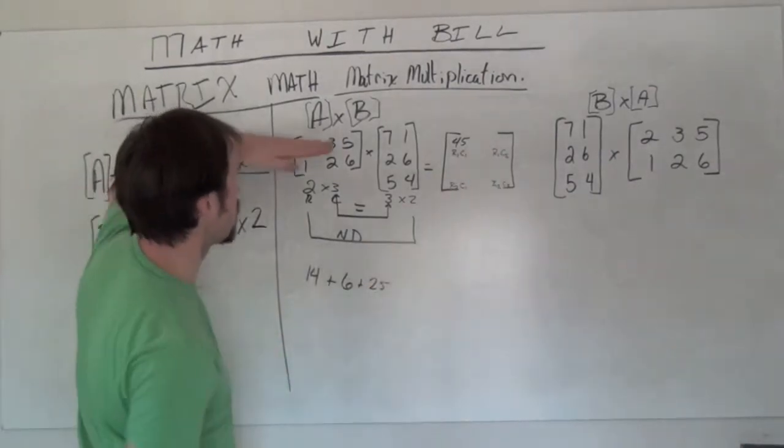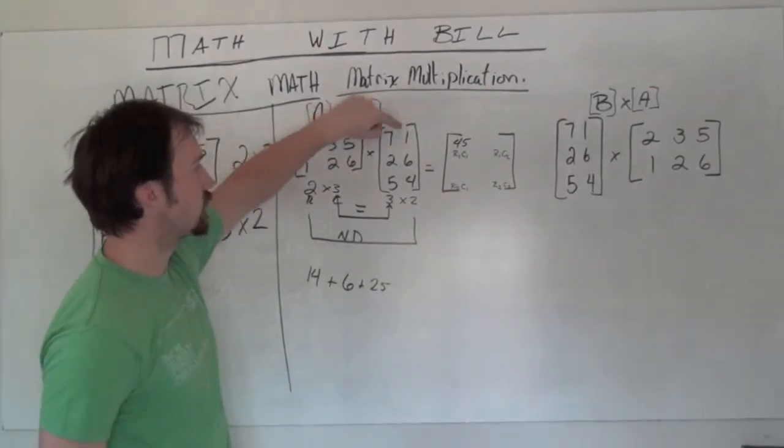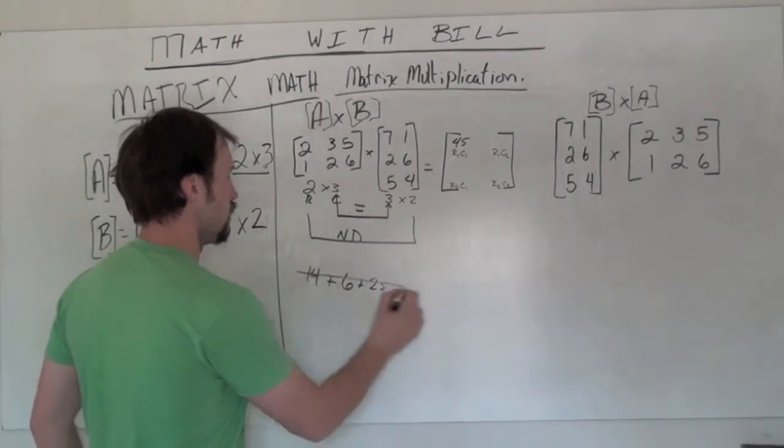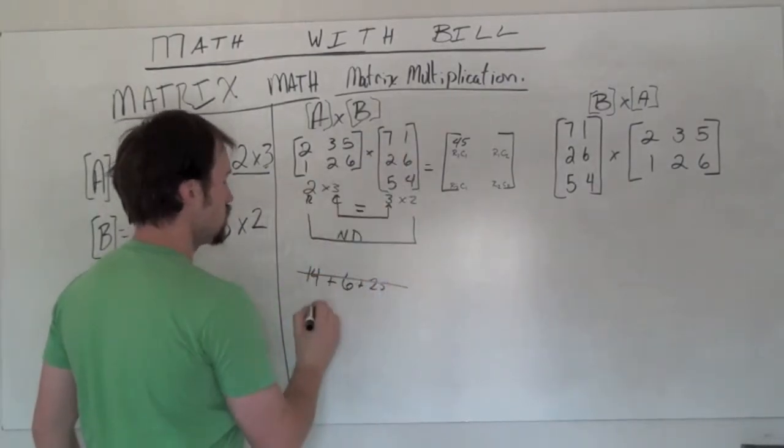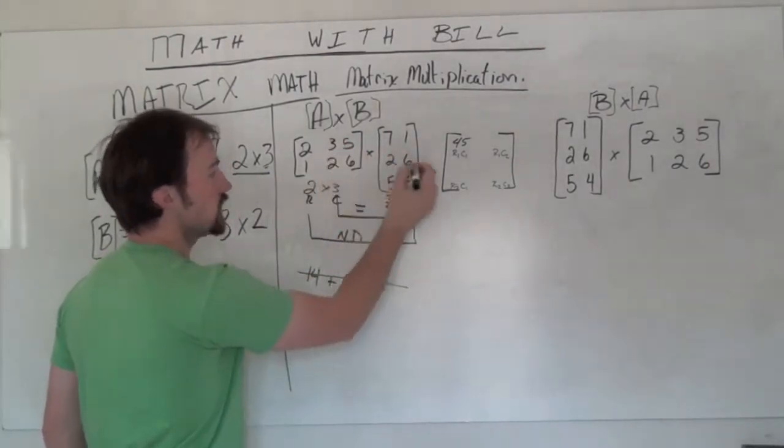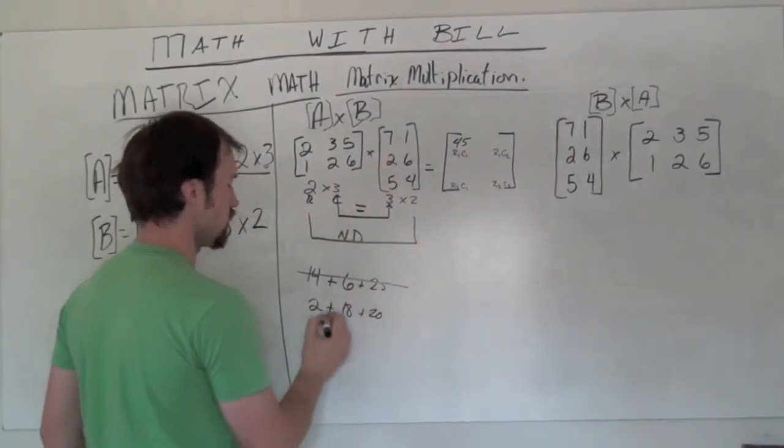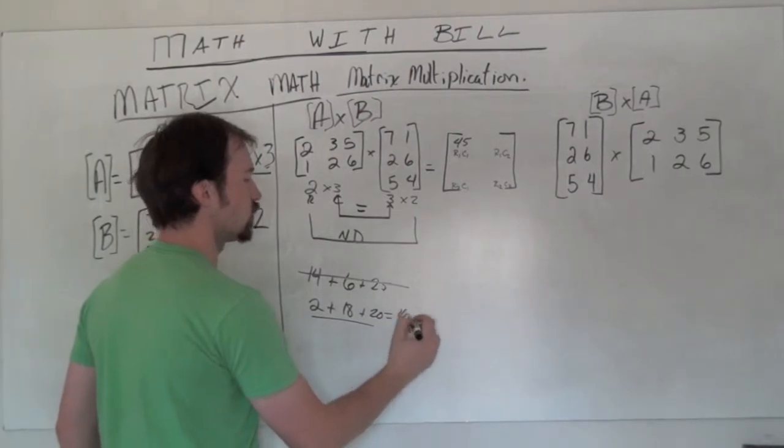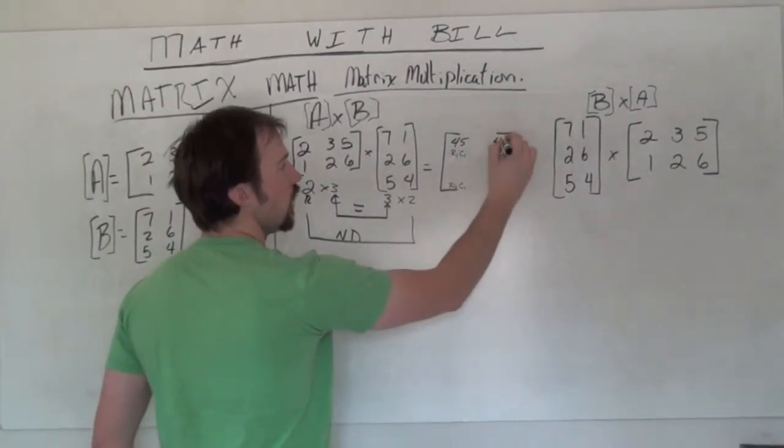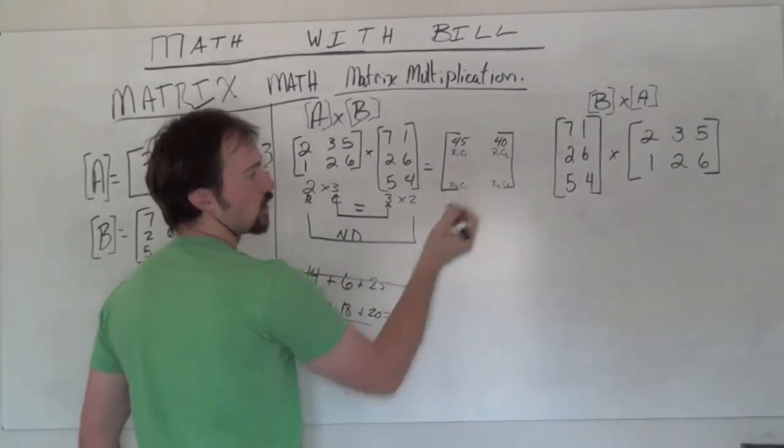Row 1, column 2, we're going to do. We're going to again take this 2, 3, 5, now times the 1, 6, 4. So 2 times 1 gives me 2, plus 3 times 6, which is 18, plus 5 times 4 gives me 20. This is all equal to 40 and that becomes our entry for row 1, column 2.